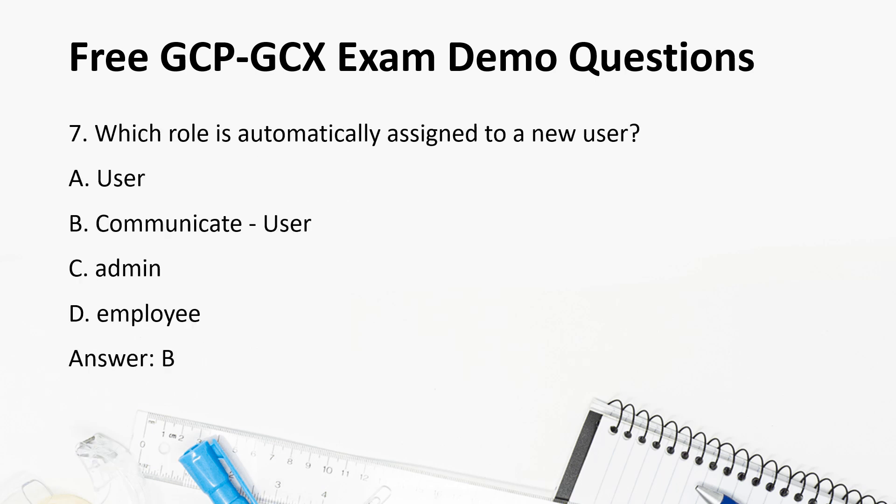Question 7: Which role is automatically assigned to a new user? a. User, b. Communicate user, c. Admin, d. Employee. Answer: b. Communicate user.